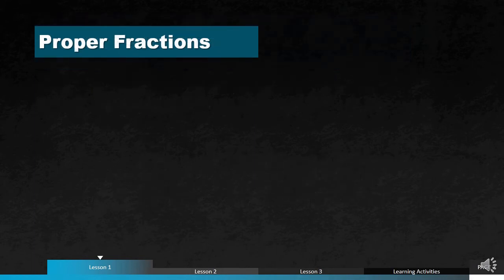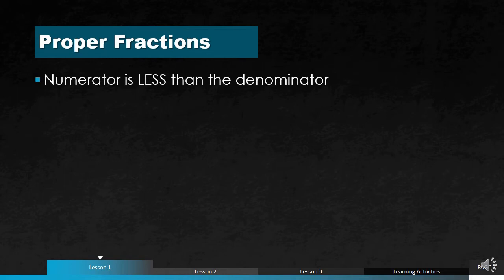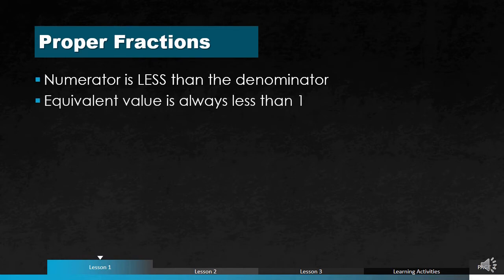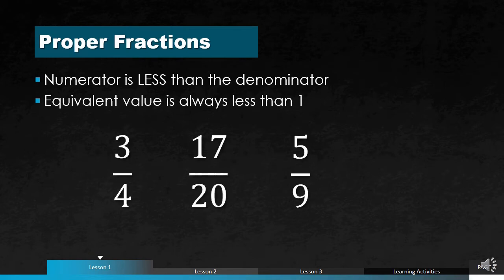Basically we have three types of fractions. First, you have proper fractions — one of the most common types you encounter. Here, the numerator is always less than the denominator, meaning the number on top is smaller than the number on the bottom, and its value is always less than 1. Some examples: 3 fourths, 17 over 20, and 5 over 9 — in each case, the numerator is less than the denominator.